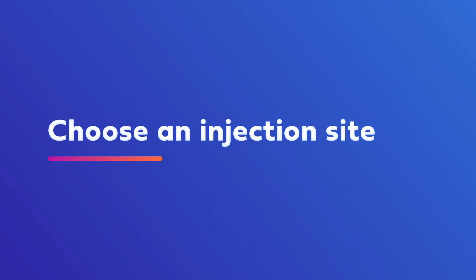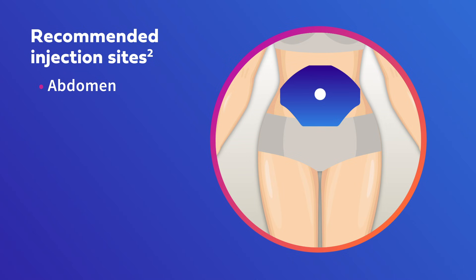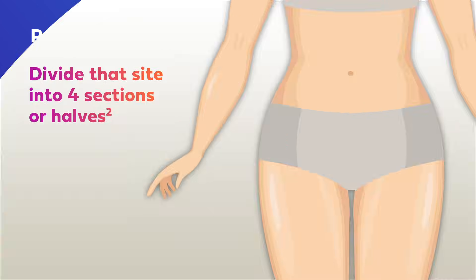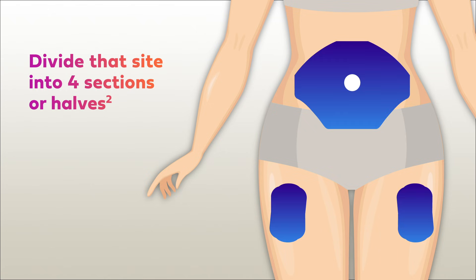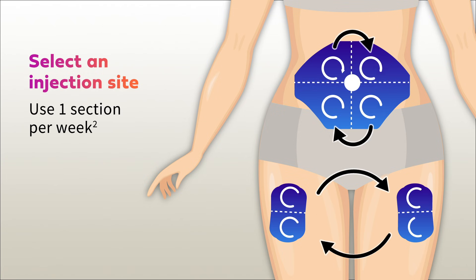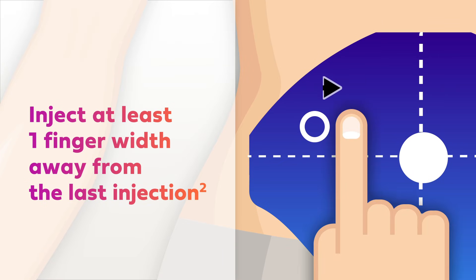First, choose an injection site. The four sites on the body recommended for insulin injection are the abdomen, thigh, upper arm, and buttock. Once a site is chosen, it should be divided into four sections, or halves when using the thighs or buttock. Use one section per week and rotate injection sites within that section. Always inject at least one finger width away from the last injection.